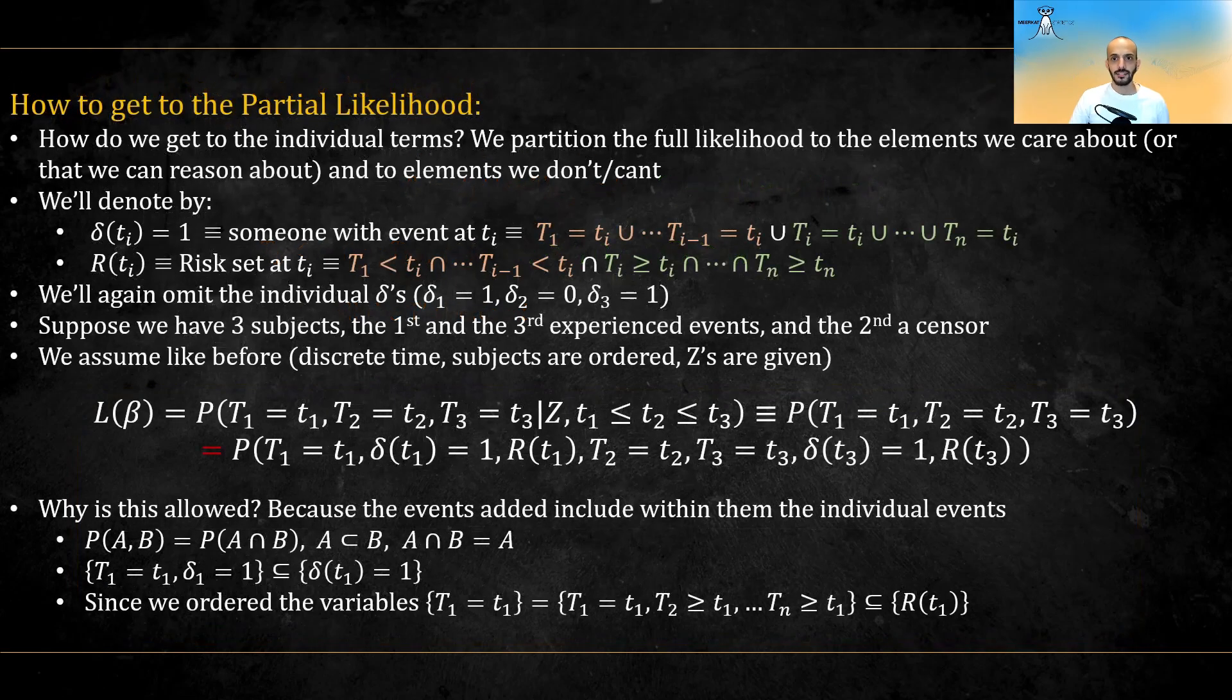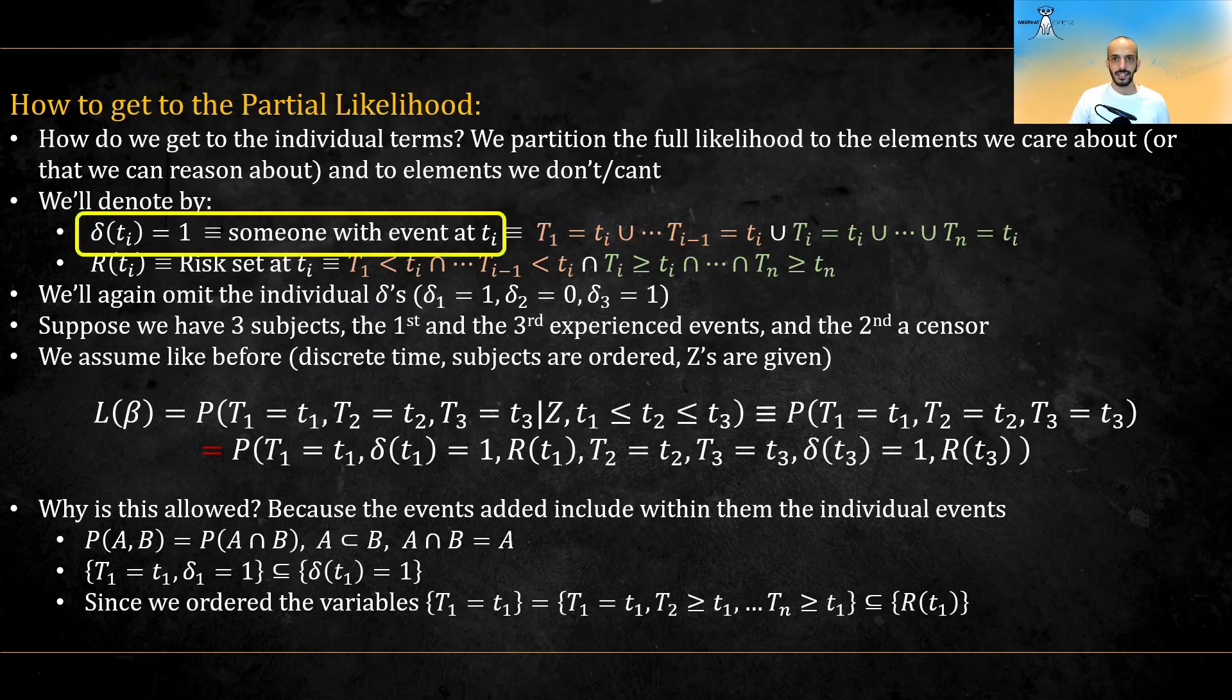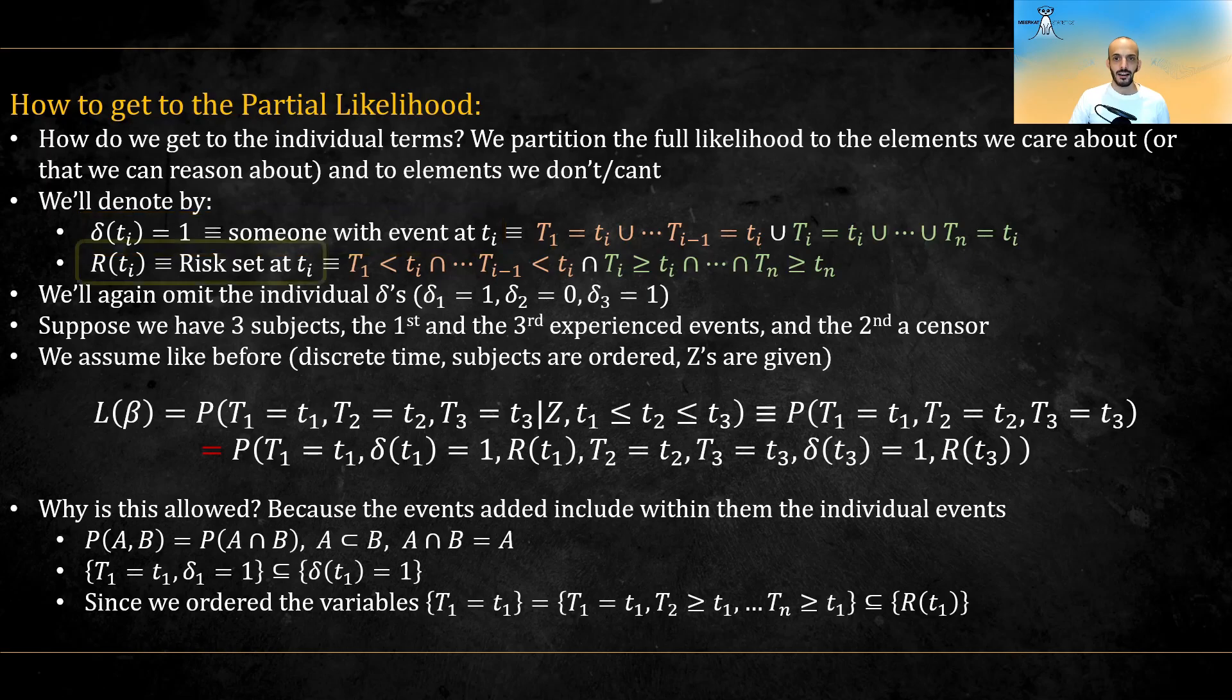But how did we even get to these individual terms? Well, by a special way of partitioning the full likelihood. We'll denote by delta of time ti equal one that someone had an event at ti, and by r of ti the risk set of ti, and we'll again omit the individual deltas.